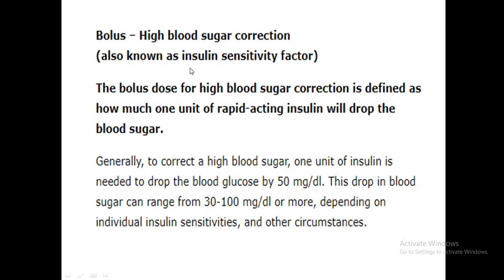The next parameter is the high blood sugar correction, also known as the insulin sensitivity factor or correction factor. After giving the bolus dose, if blood sugar is still elevated, you need to give another bolus for correction. The correction factor is defined as how much one unit of rapid-acting insulin can drop the blood sugar. One unit generally drops blood glucose by 30, but it can range from 30 to 100 depending on insulin sensitivity.